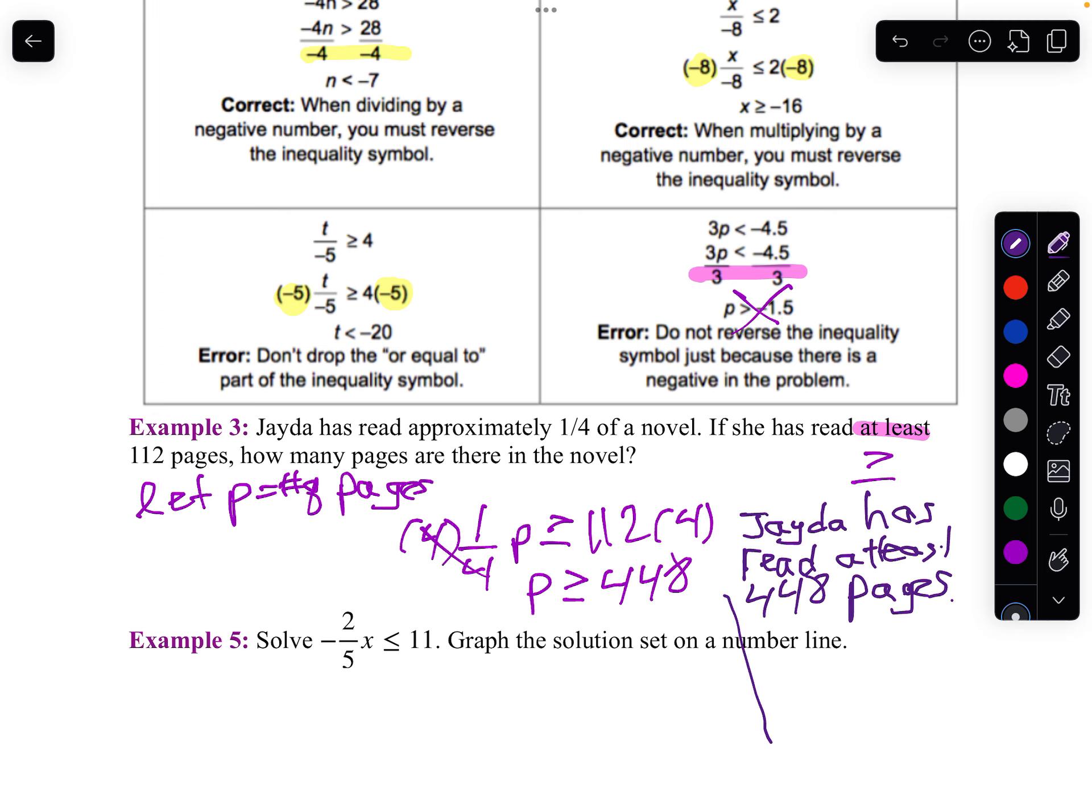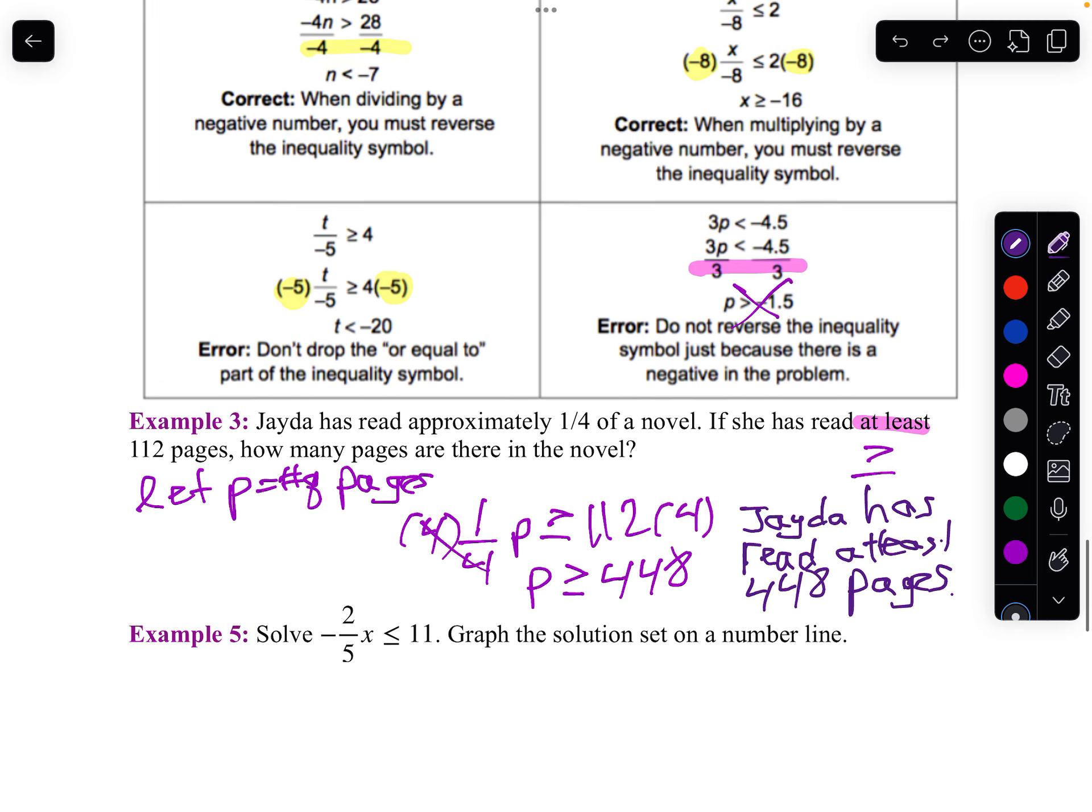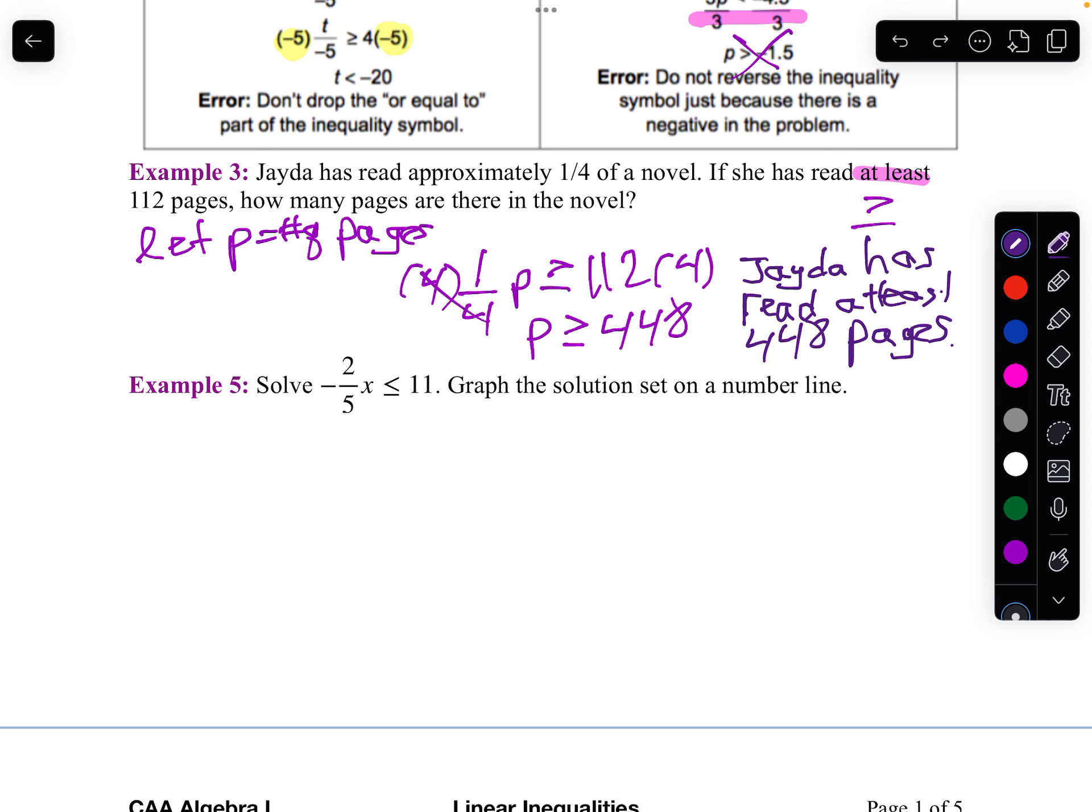Now on number 5, notice we have a negative. Negative means we're going to flip it. But I've got this fraction, so I'm going to do one step at a time. First, I'm going to multiply both sides by 5 because I don't like fractions. And we get negative 2x is less than or equal to 55. Notice, I didn't flip it because I multiplied both sides by 5.